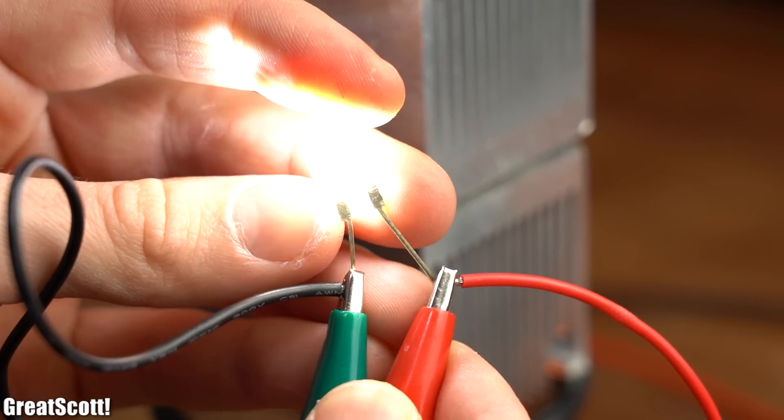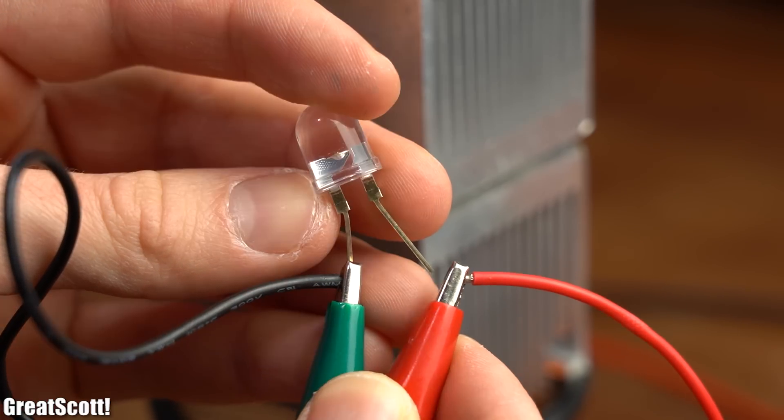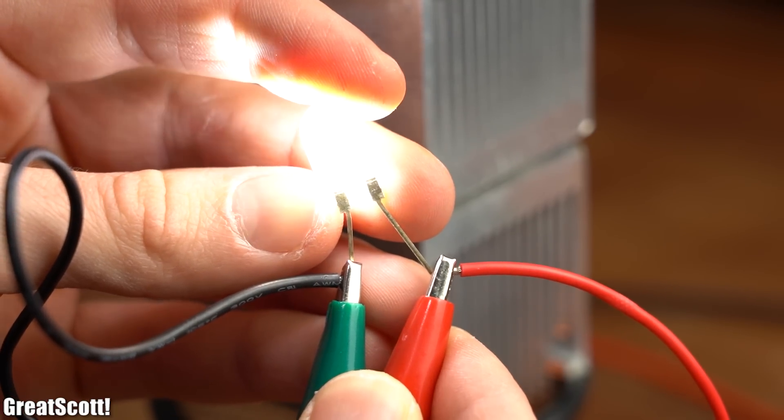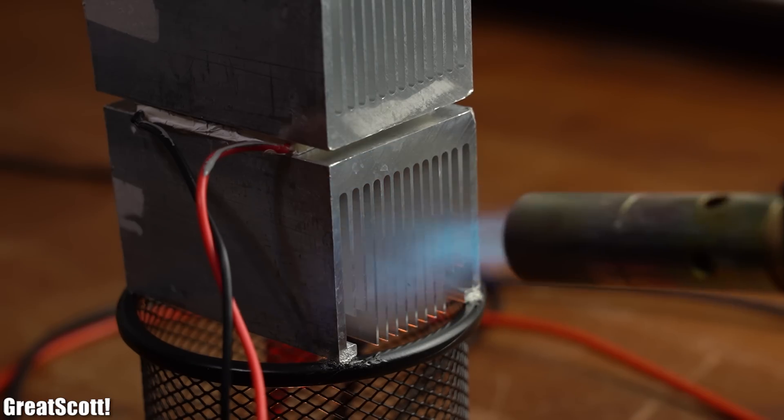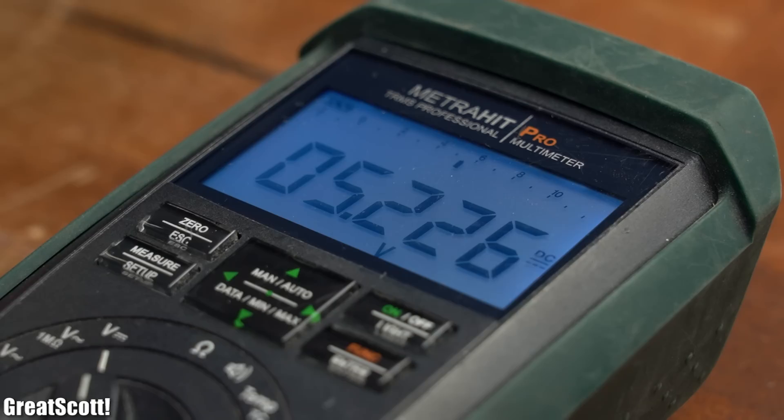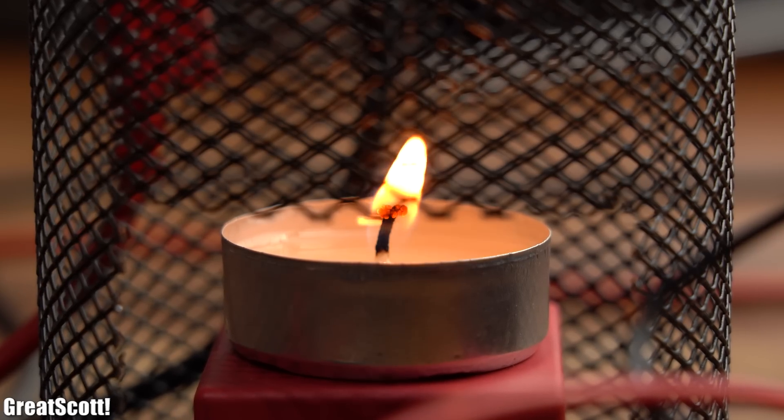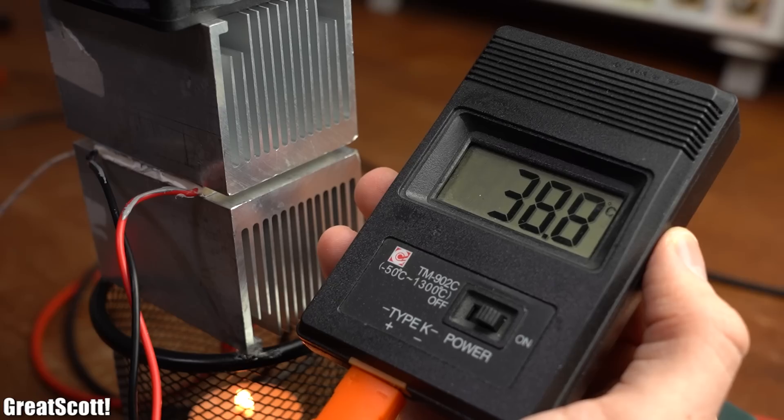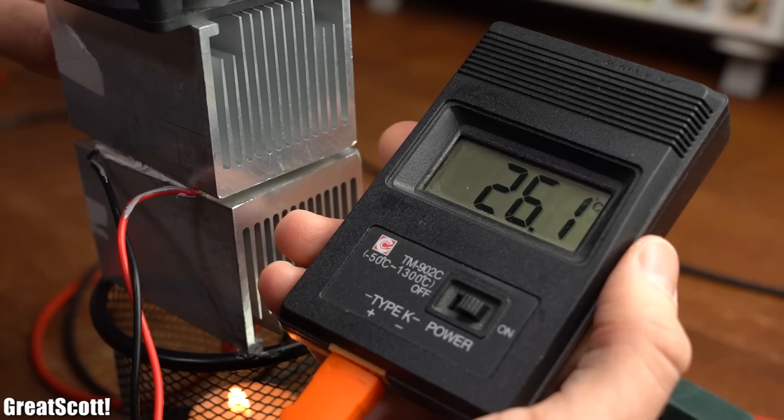But the only true way to power something directly with this thermoelectric generator was by heating up the hot side with a blowtorch which was certainly not intended by the original creator. The problem is that the radiated heat of the tea light and thus the temperature difference is simply not enough.